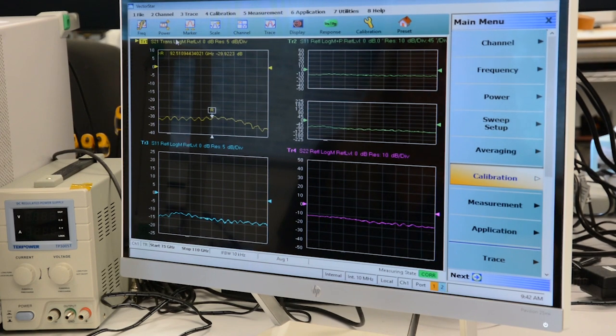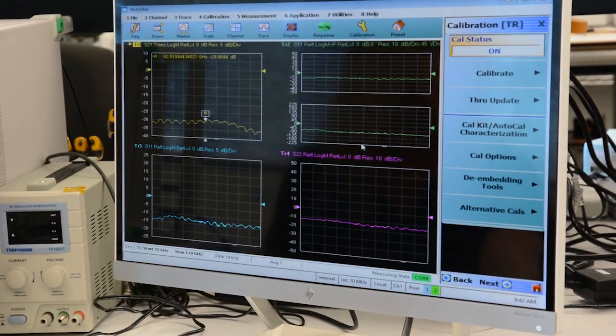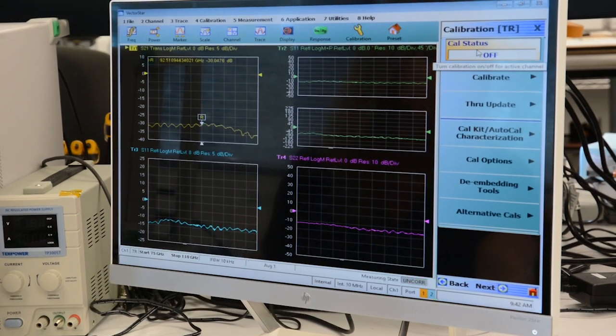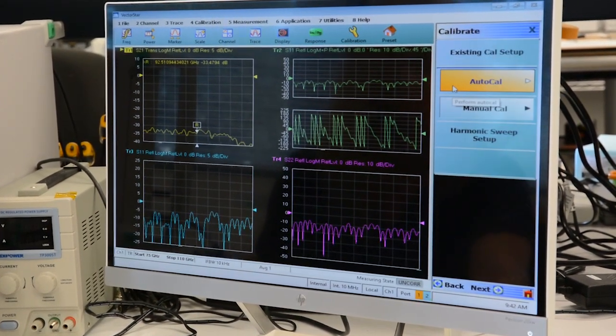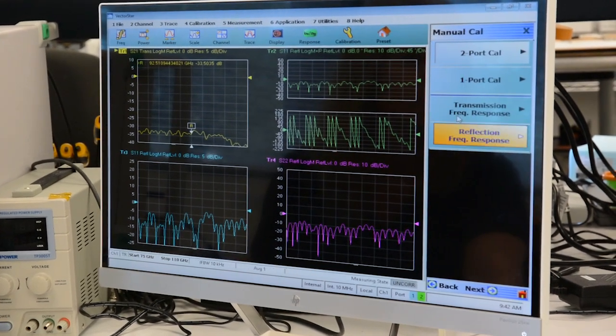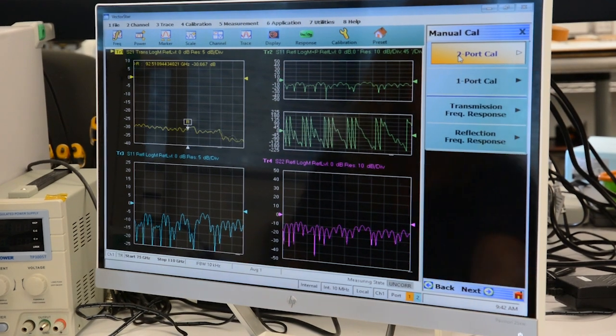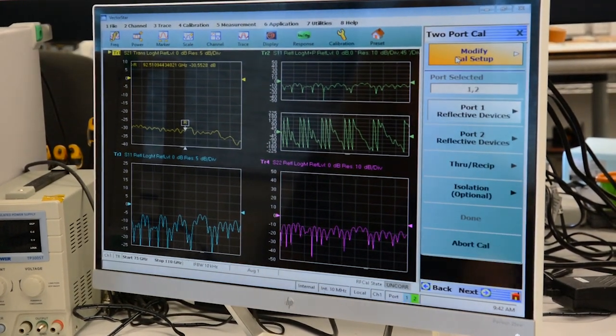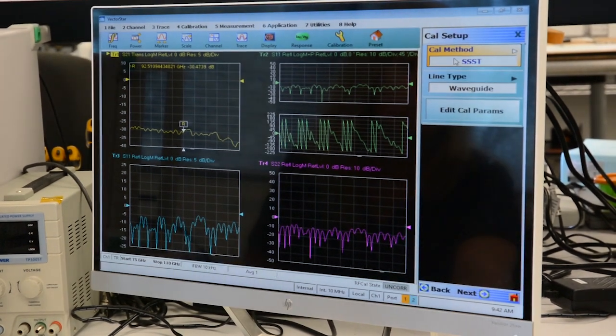Here we have our setup with all our descriptions and we are going to go to calibration. Our calibration status needs to be off. Hit calibrate and go to a manual cal. This is a two port cal that we will be using. Now we want to modify our cal setup to make sure we have the correct information.